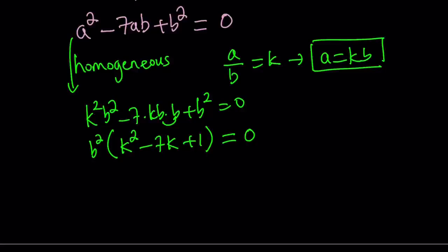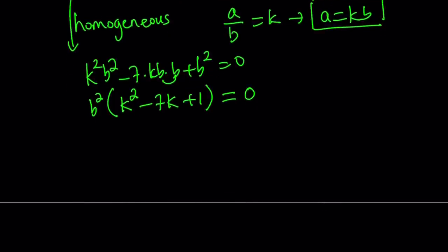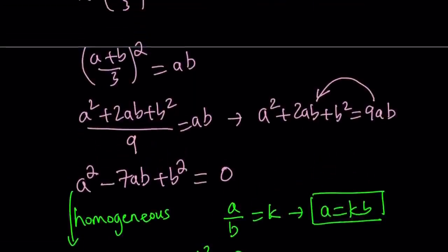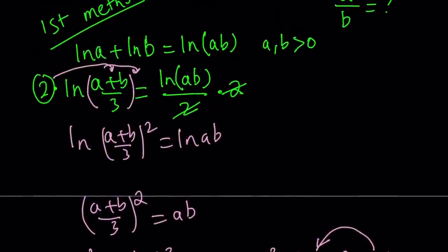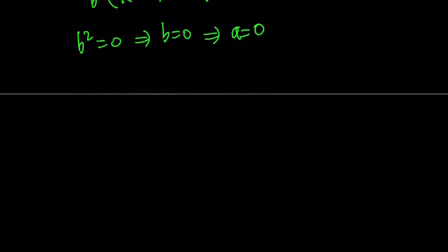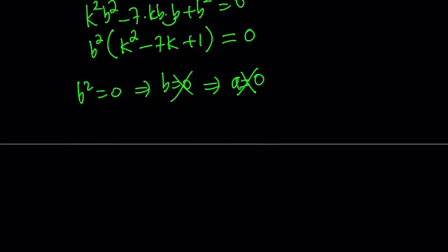So now notice that we get two results. Either b² equals 0 or k² - 7k + 1 equals 0. b² equals 0 implies b equals 0. And in the original problem, if you replace b with 0, you get a equals 0. But remember our condition: a and b have to be positive because we're dealing with a natural log. So these are not acceptable. Which means b² does not equal 0, which means the other factor needs to equal 0, which is k² - 7k + 1 equals 0.